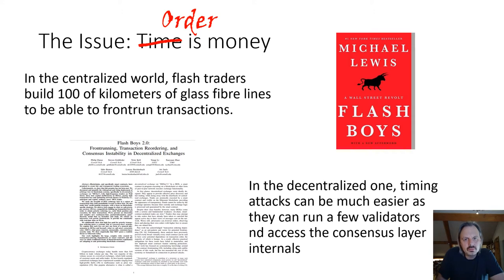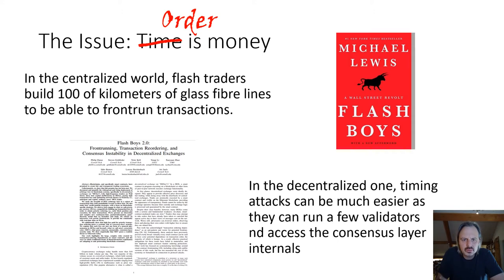The main issue is that if you talk about exchanges, both centralized and decentralized, transaction order translates into money. There's a very nice book, Flash Boys, which describes stories of flash traders spending hundreds of millions to shave off microseconds of transaction time and then turn this again into hundreds of millions of profit. Now in the decentralized world, timing attacks can actually be much easier, as it's sufficient to run a few validators to get access to the consensus layer internals, and rather than needing very fast connections, you need to understand the consensus protocol and act on seeing messages early.